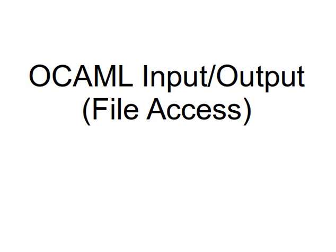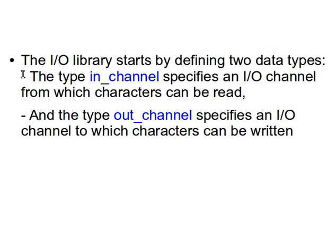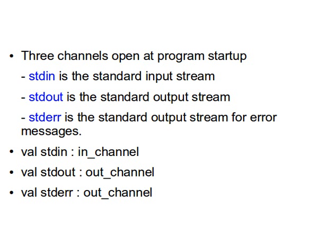This time we are going to learn about how we can access files, read from files, and write to files, as we used to do in Java and other languages. OCaml IO is very powerful and very quick. The IO library starts by defining two data types: in_channel, which specifies the IO channel from which characters can be read, and out_channel, which specifies the channel to which characters can be written.